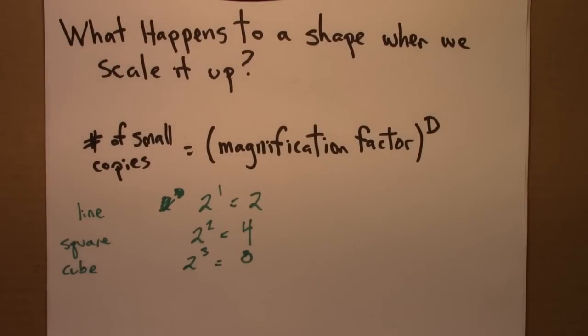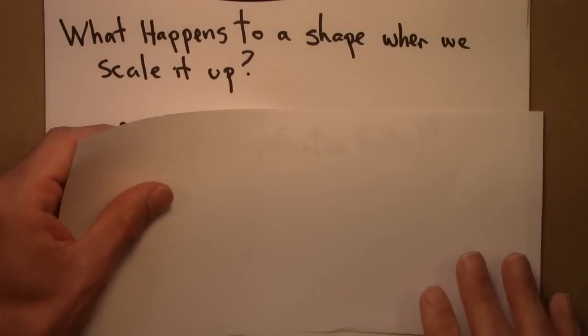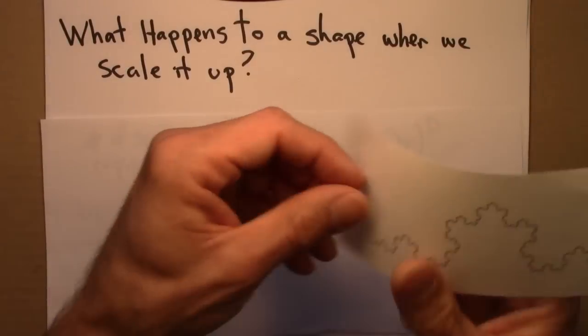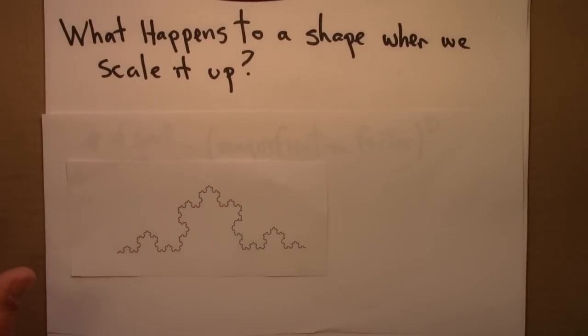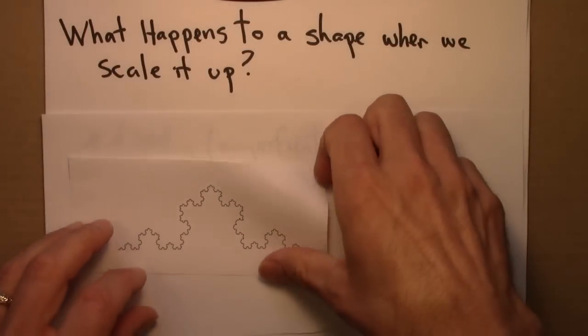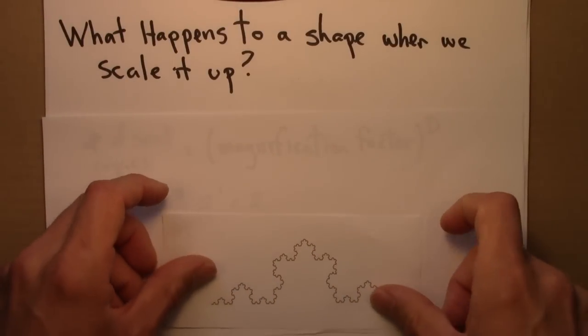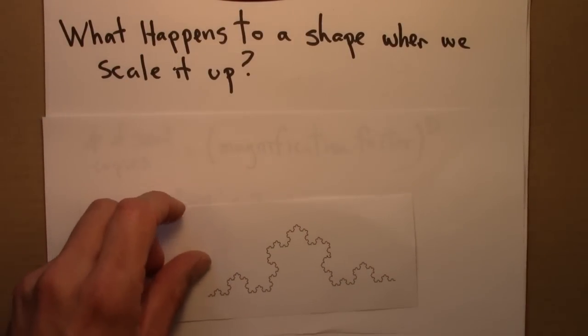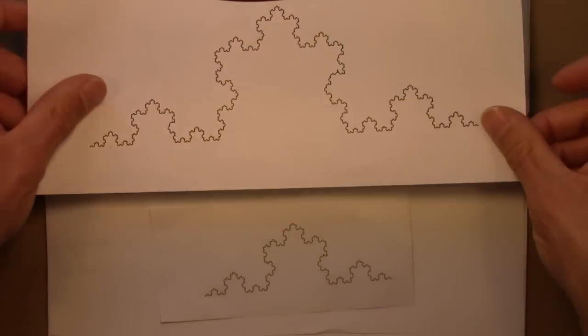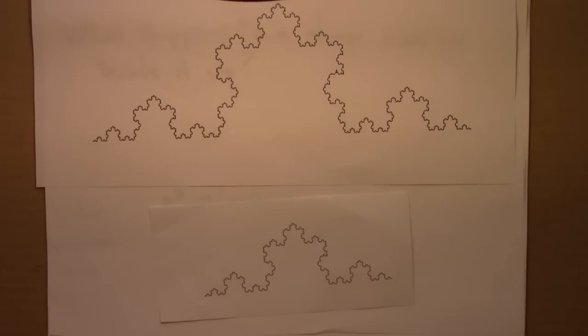All right. So now, let's think about a different shape. So this is the Koch curve. So here's a small Koch curve, and then I did the same thing. I put it in the photocopy machine, and I said, all right, make it twice as big.